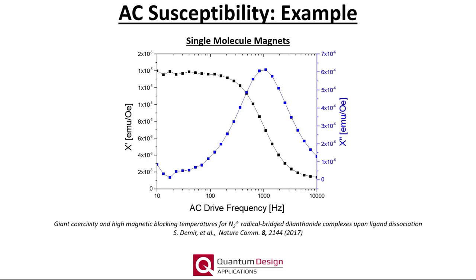Measurements as a function of applied DC magnetic field and AC drive frequency are also possible using the ACMS2. Such frequency-dependent measurements are commonly performed on single-molecule magnets — see the cited paper for more information. Such frequency-dependent measurements are also useful when studying magnetic nanoparticles and can be used to calculate the average nanoparticle size and relaxation mechanism.